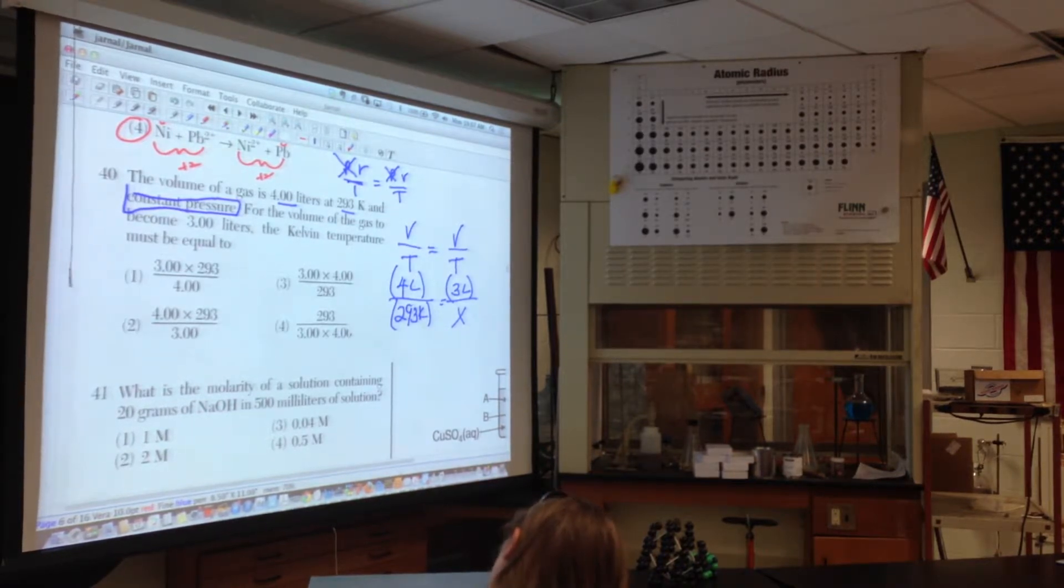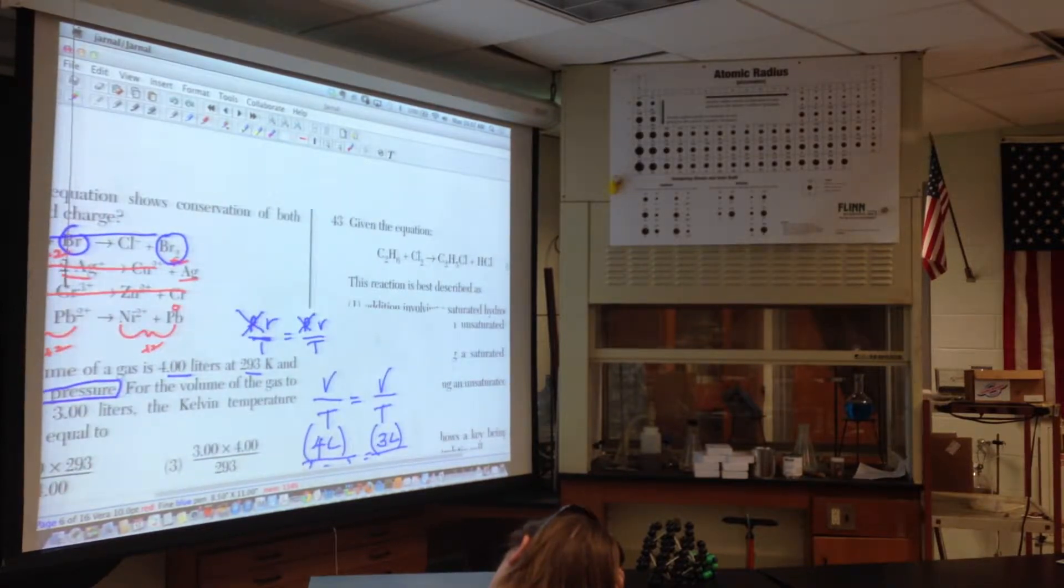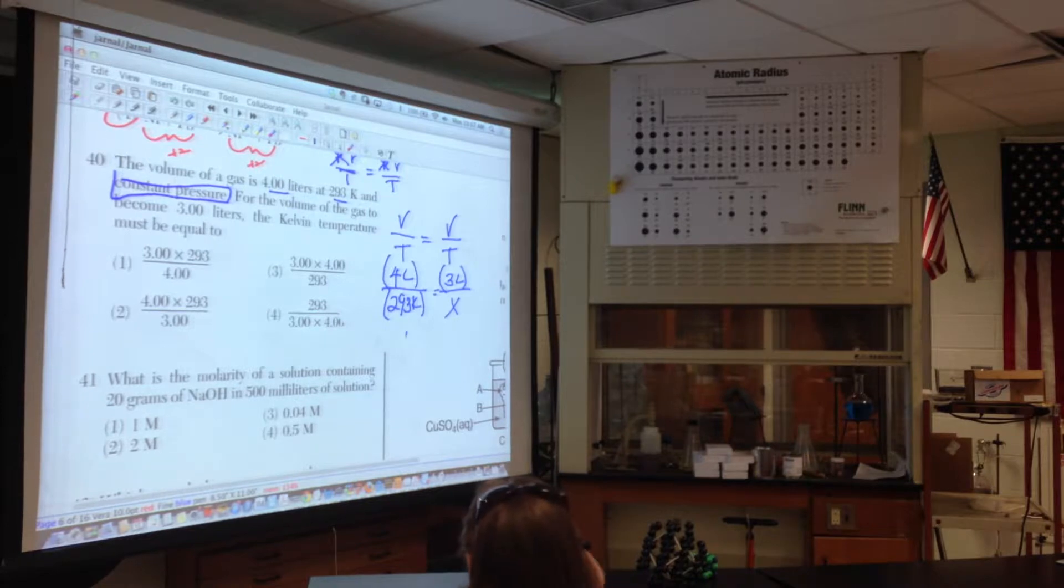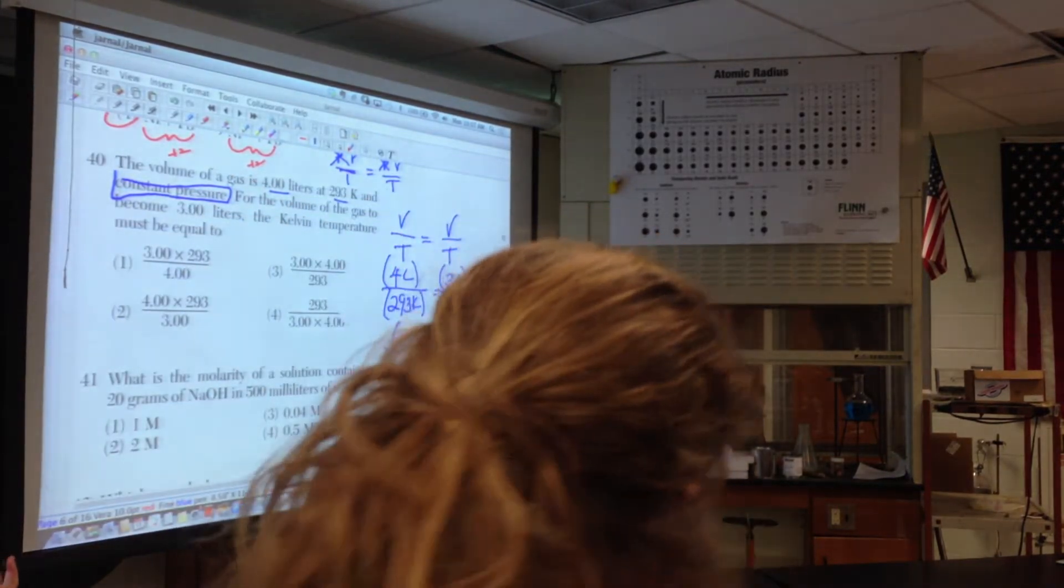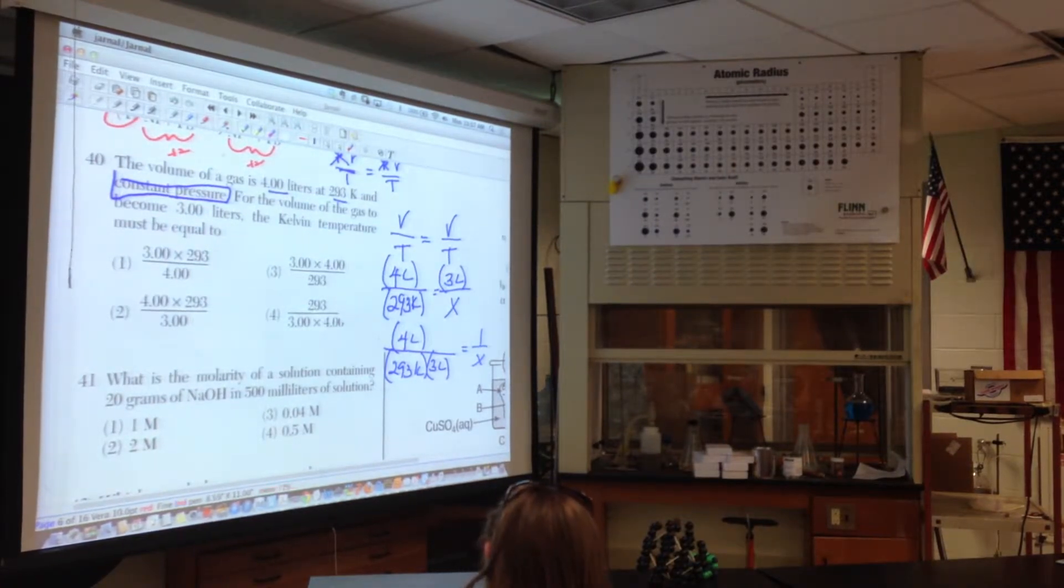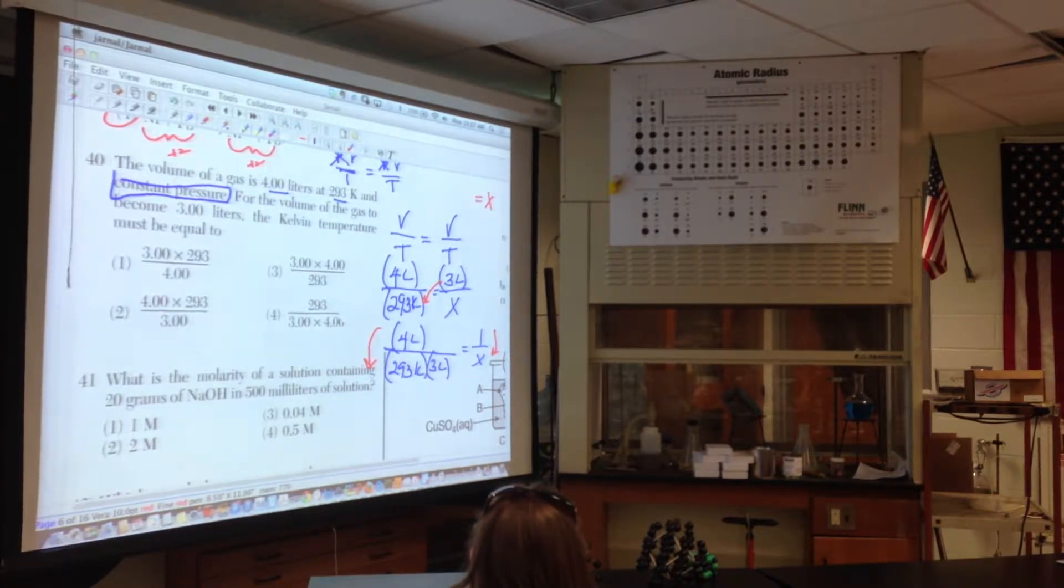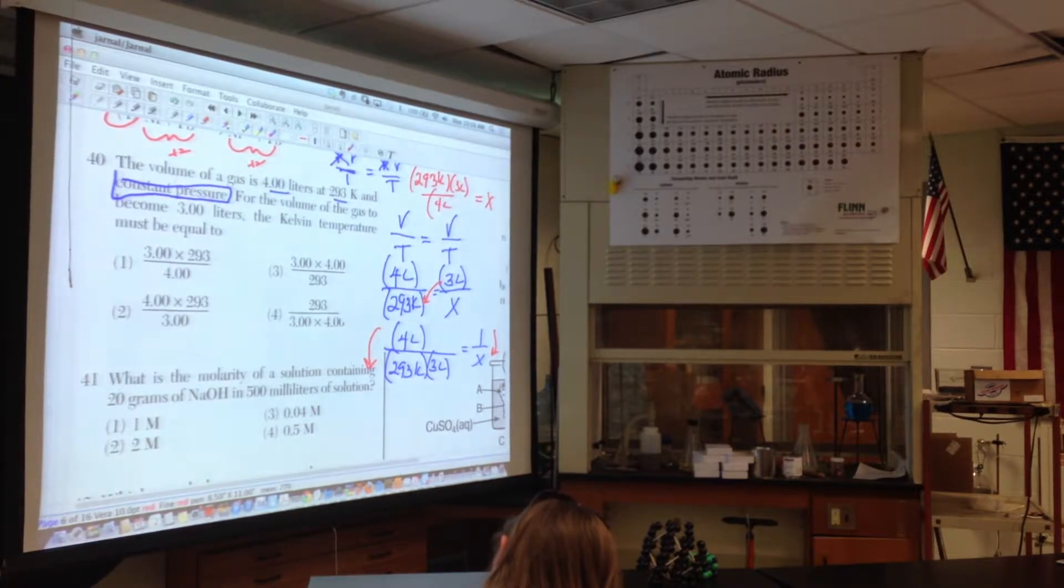So, if I'm using this formula, PV over T, I call this the current scenario, PV over T. This is the future. What's constant? Pressure. So, just exit out. So, it's volume over temperature of a current scenario is volume over temperature in the future. So, what do they have? A volume of a gas at 4 liters at 293 Kelvin. They're nice. They've given us a Kelvin already. That goes together. It's at constant pressure. For the volume of gas to become 3 liters, okay, the Kelvin temperature, and there's your X, is that. Solve for X. So, which choice shows that? Now, many people come to the right answers differently. Okay, I like to use algebra.